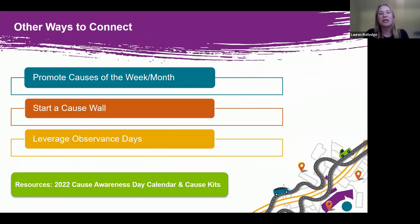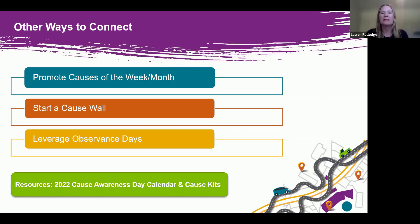A few other ideas to consider this fall include a cause-of-the-week or cause-of-the-month promotion. We've seen a lot of success with these — they give you a framework to promote different charities and give employees ideas for what to learn more about and consider pledging to. Or create a cause wall, which can be done in person or virtually on an internal website. And celebrate observance days — on our employee giving hub, we have all of this year's cause awareness days in one place, along with a calendar showing which observance days line up with your campaign dates or themes.